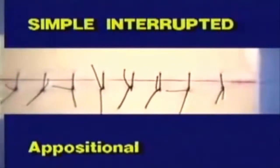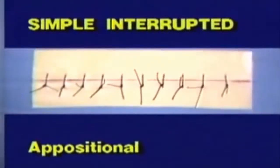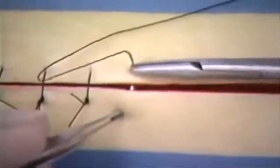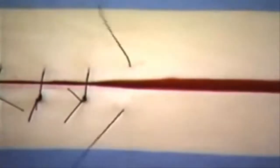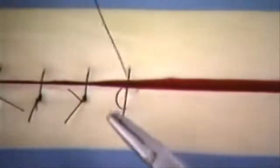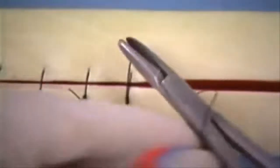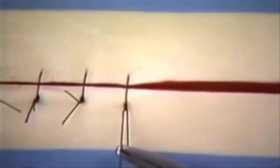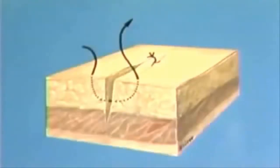The first suture pattern to be demonstrated is the simple interrupted. It is an appositional suture pattern. The simple interrupted suture is made by introducing the needle through the tissue approximately 5 millimeters lateral to the incision. The suture is inserted through the tissue on one side and passed through the opposite side perpendicular to the incision, taking the same amount of tissue in a single bite, and then tied. This illustration shows the finished simple interrupted suture.